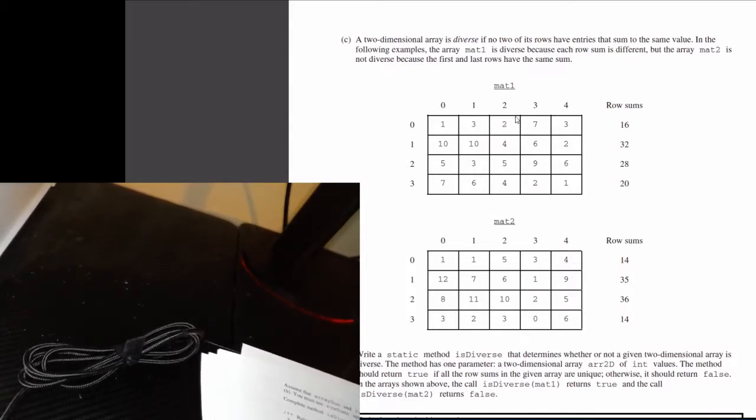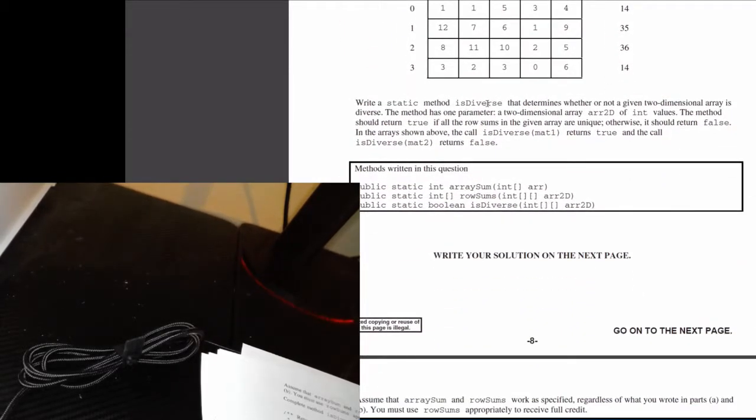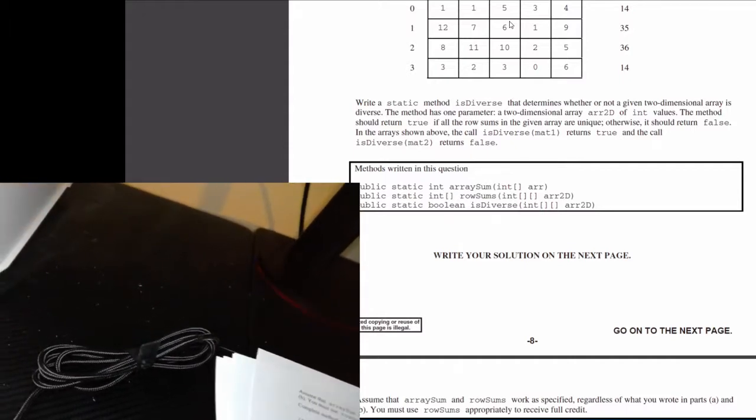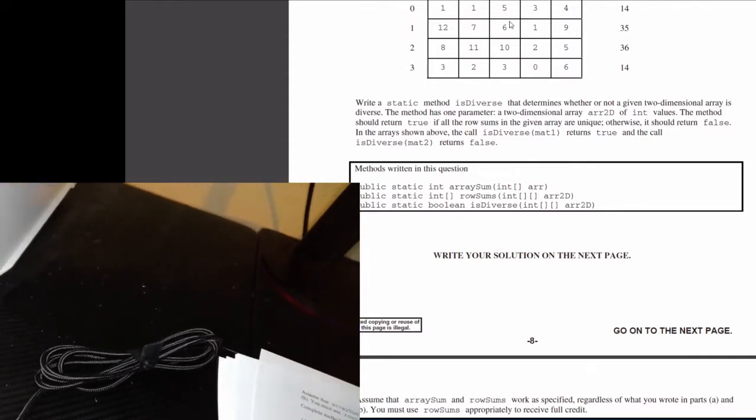But if a 2D array has two or more rows that sum to the same number, then it is not diverse. For example, MAT2 here has row 0 and row 3 both summing to 14, so this is not a diverse array. What we want to do is create a static method called isDiverse that returns a Boolean value, a true or false value.